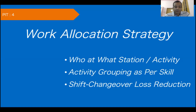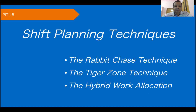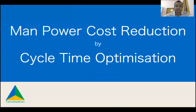PIT 5 covers shift planning techniques, discussing three major strategies: the Rabbit Zone formation for when you have fewer people but more quantity to produce, the Tiger Zone formation for when you have more manpower with less quantity, and a combined Hybrid Workflow Strategy — all of which incorporate skill parameters.